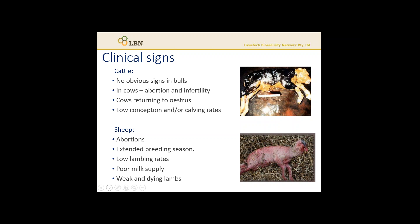Infected ewes that deliver full-term lambs may have a poor milk supply, which further contributes to weak lambs and increased perinatal deaths. Abortion rates as a result of infection can range from 5 to 50%, and you will see sometimes further production losses through ewe deaths that have contracted uterine infections. A flock in a cool, moist environment with a high number of abortions can exacerbate the contamination of the bacteria on pasture, and predation can further spread the aborted materials, placenta or dead lambs, which will potentiate the infection.